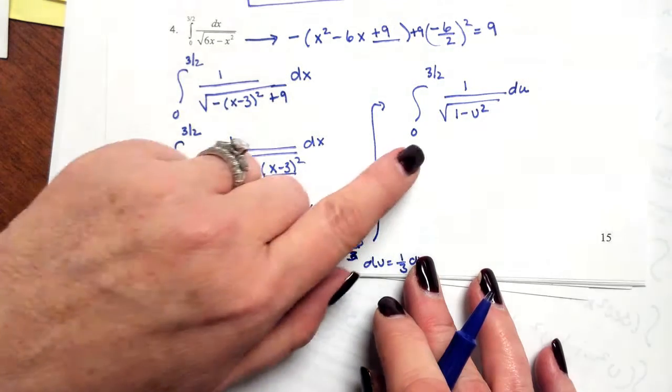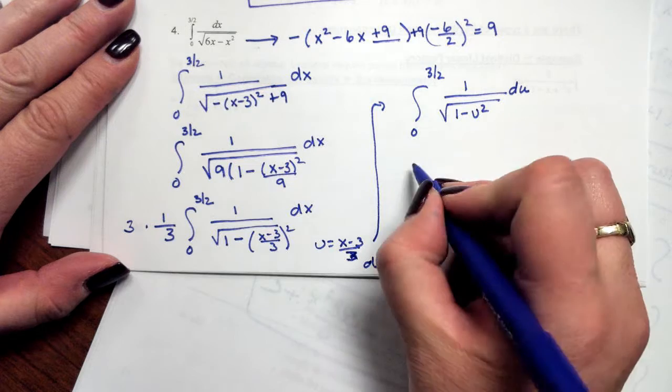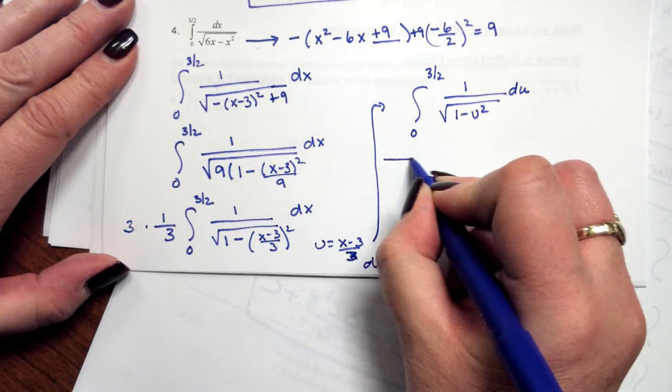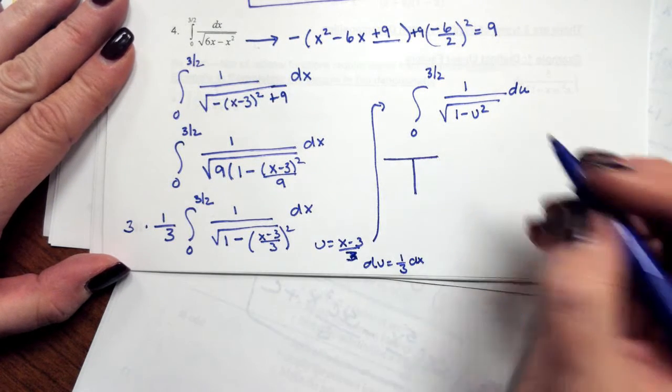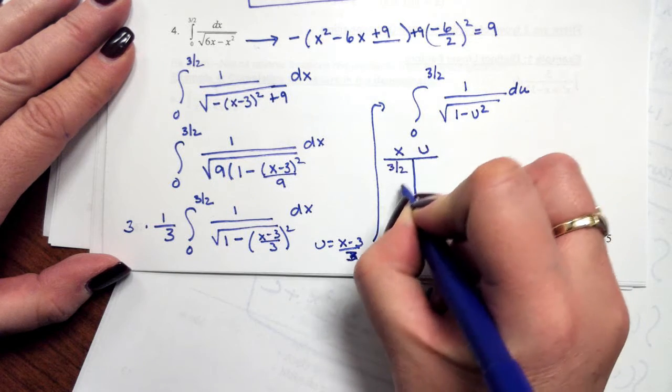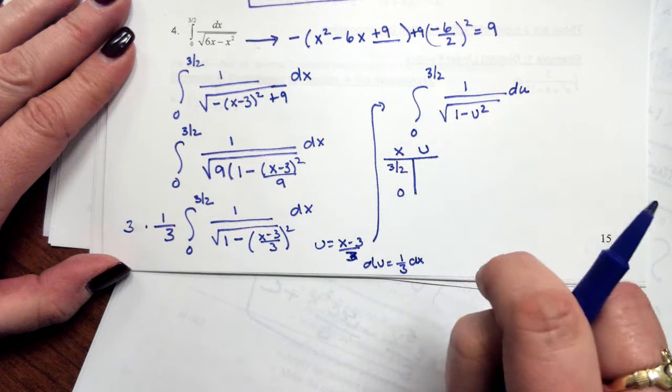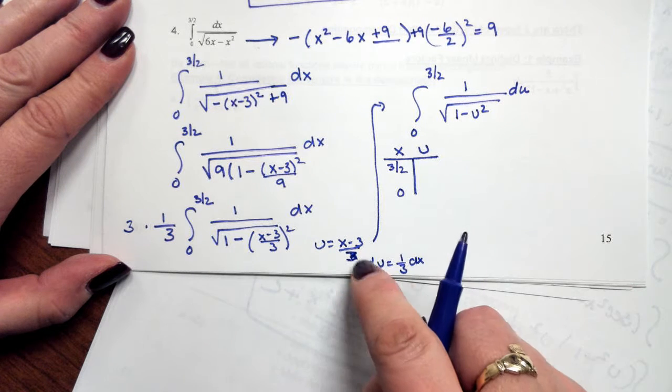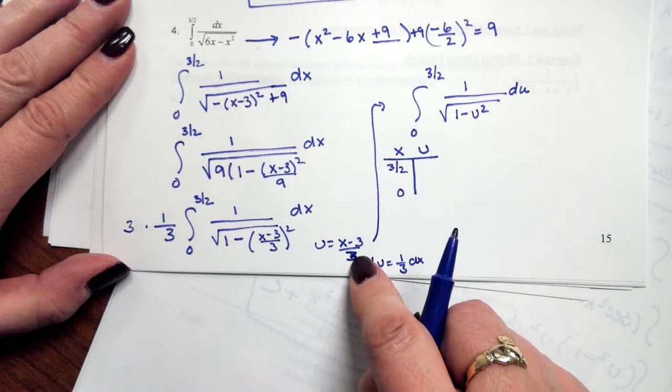Now remember, when I change my integral in terms of u, I've got to change my bounds. So in terms of x, the bounds were 3 halves to 0. Remember, u is equal to x minus 3 over 3.